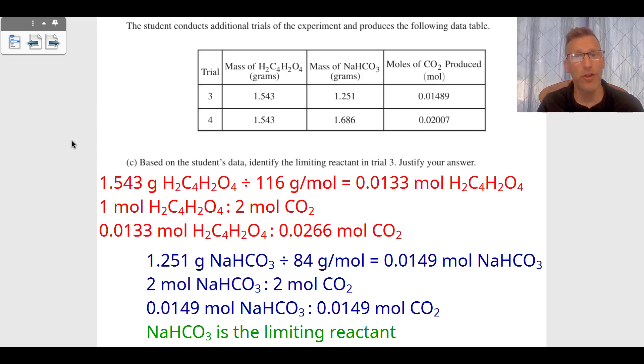Double checking, we take 1.251 grams of sodium bicarbonate, divide by the molar mass. That's 0.0149 moles of NaHCO₃. Looking at the chemical reaction, for every two moles of NaHCO₃ we make two moles of CO₂. So for every 0.0149 moles of NaHCO₃ we make 0.0149 moles of CO₂, which is the exact amount we produced. This means NaHCO₃ is the limiting reactant.